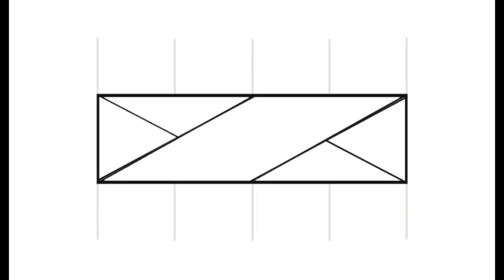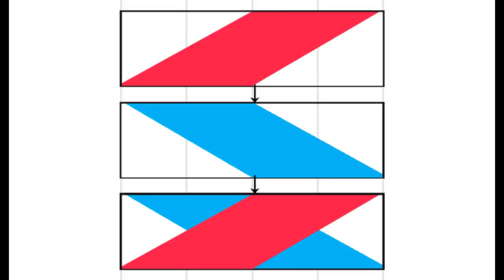Now we're going to look more closely at the actual cable symbols. The first symbol I showed you represents a 2/2 RC, or a two over two right cross, which is where two knit stitches cross over two knit stitches. In the diagram, there's a right-leaning cable strand two stitches wide in red and a left-leaning cable strand two stitches wide in blue. The right-leaning strand is at the front because it's a right cross, and that's what makes up the symbol you see on cable charts. Understanding how cable symbols are formed is a great help.